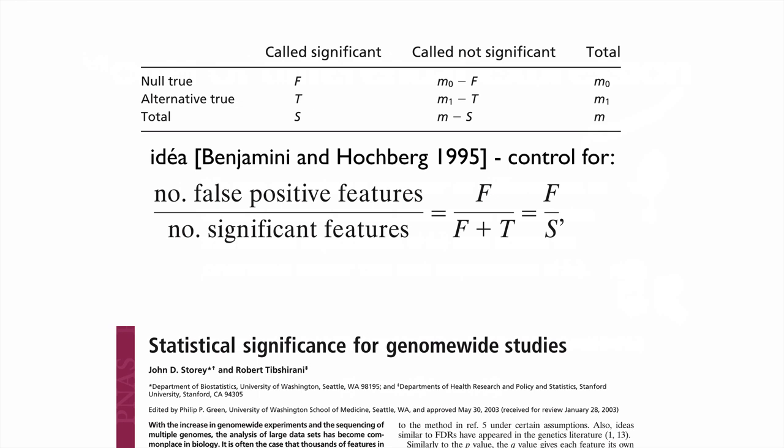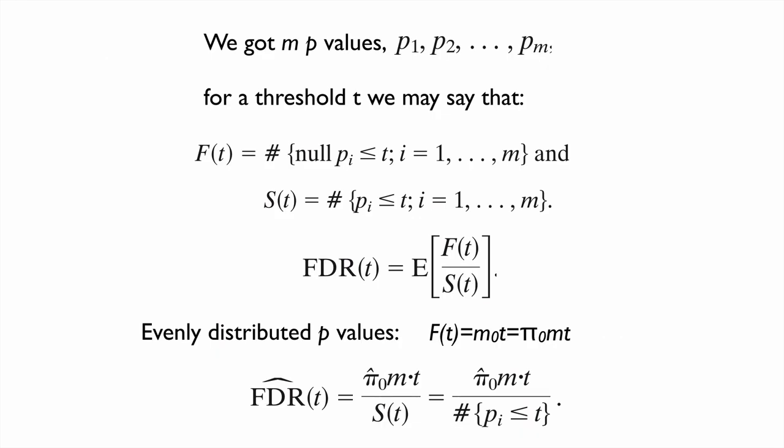Say that we have a stream of P values from P1 to PM. It will be desirable to be able to build up a function F of T here, which is the number of null statistics below a certain threshold T. Similarly, we actually quite easily can make a function S of T that reports the number of P values below a T value regardless of if they belong to the null or alternative hypothesis. So this is actually very easy to make. It's just to count the number of P values below a certain threshold. If we would have those two functions, we can calculate the expected value of the fraction of them, namely the false discovery rate.